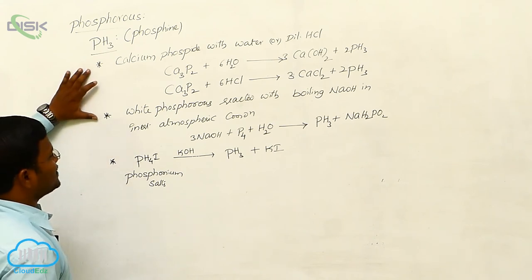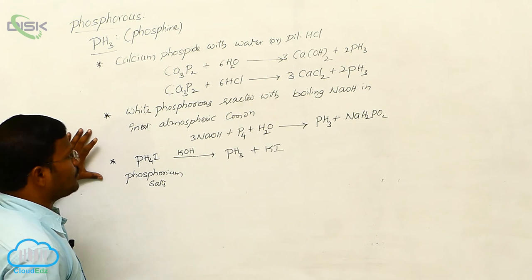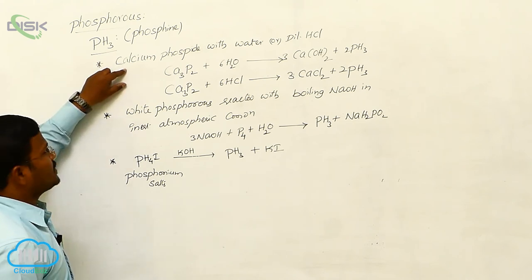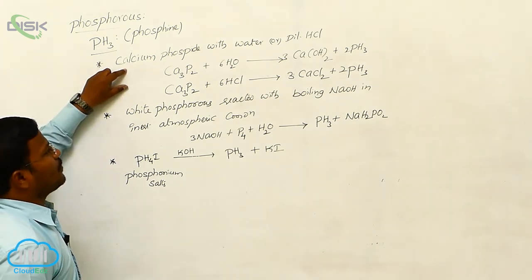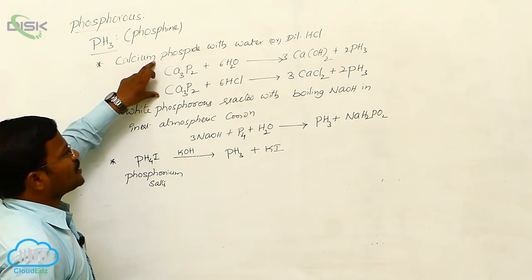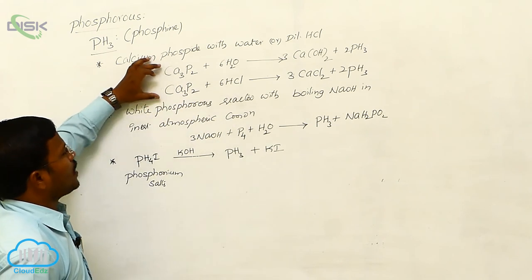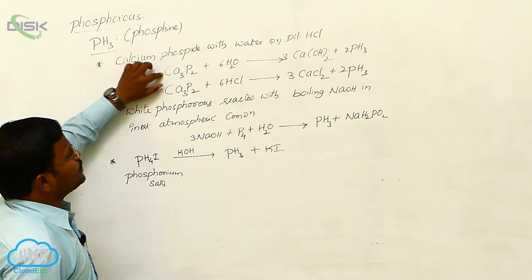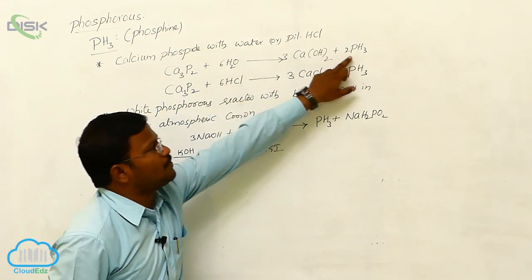That means phosphine is prepared in three different manners. In the first method, phosphine is produced from hydrolysis or reaction with HCl of calcium phosphide. When calcium phosphide reacts with water, it produces phosphine.